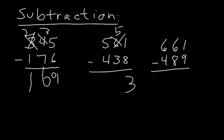And 50 minus 30 equals 20, and 500 minus 400 is 100. And the third one: 1 minus 9 is also impossible.